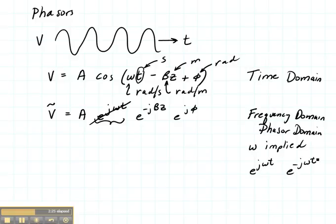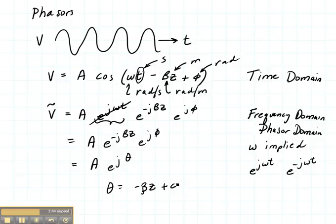All that does is change the sign of the remaining terms in the complex numbers. So our voltage is A, e to the minus j beta z, e to the j phi. It can also be written as A, e to the j theta, where theta is minus beta z plus phi.